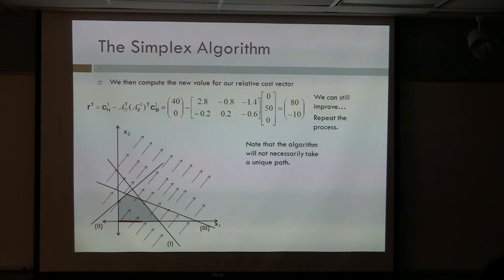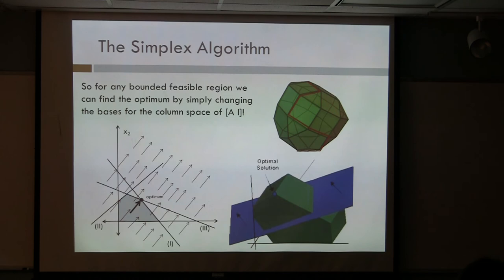So the path is not unique. We have a way of getting to our optimum by just changing the bases for the column space of A, our augmented matrix. And that's all we're doing in order to move along the vertices of this domain and find our optimal solution.